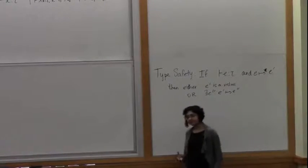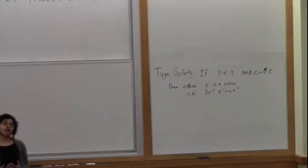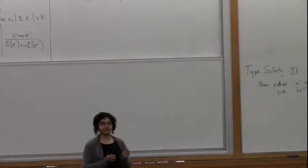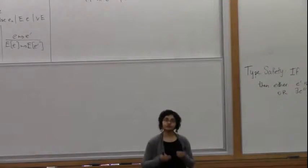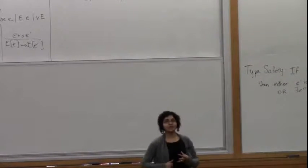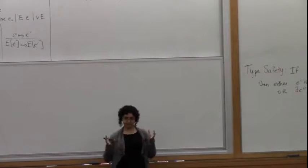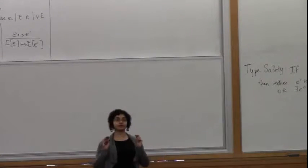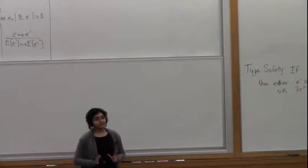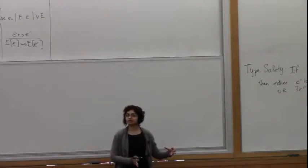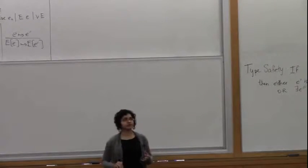Right now we're working in a very simple setting — simply typed lambda calculus. But as you develop richer languages with richer type systems, one issue with progress and preservation is that after every single step you have to be able to type-check your program. You have to be able to type-check running programs, and sometimes in order to do that you have to build a lot more stuff into your type system.